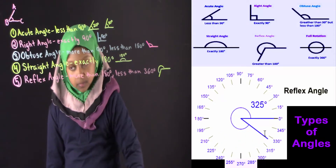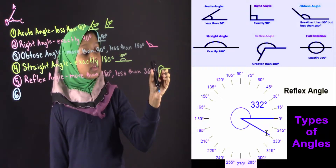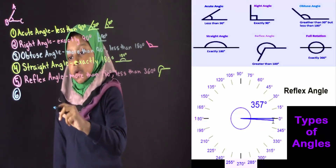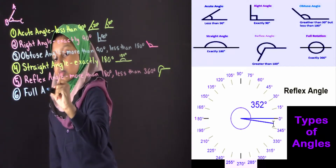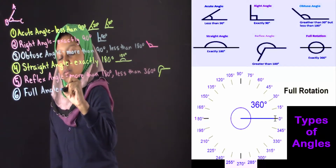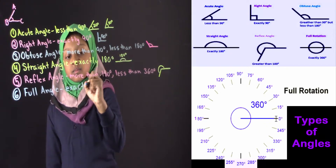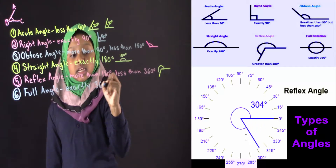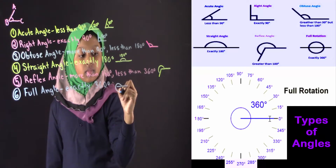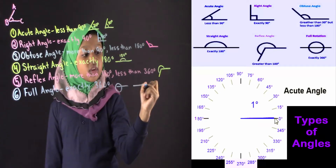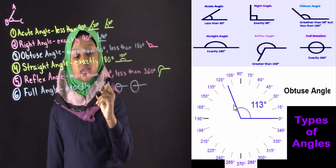Now let's move on to number six. If this reflex angle changes into 360 degrees, it's not going to be a reflex angle. It's going to be a full angle. The definition of full angle is it's an angle that is exactly 360 degrees. Over here I'm drawing a full angle. I'm drawing another full angle here. A full angle is like a circle because a circle is 360 degrees.